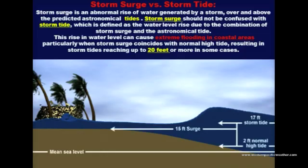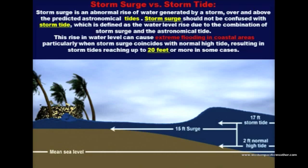Moving to the next slide — storm surge versus storm tide are two totally different things. A storm surge is the abnormal rise of water generated by a storm. It is not to be confused with a tide, which is the water level due to astronomical forces — the phases of the moon and the sun. The rise from a storm surge results in extreme coastal flooding, sometimes upwards of 20 feet or more.